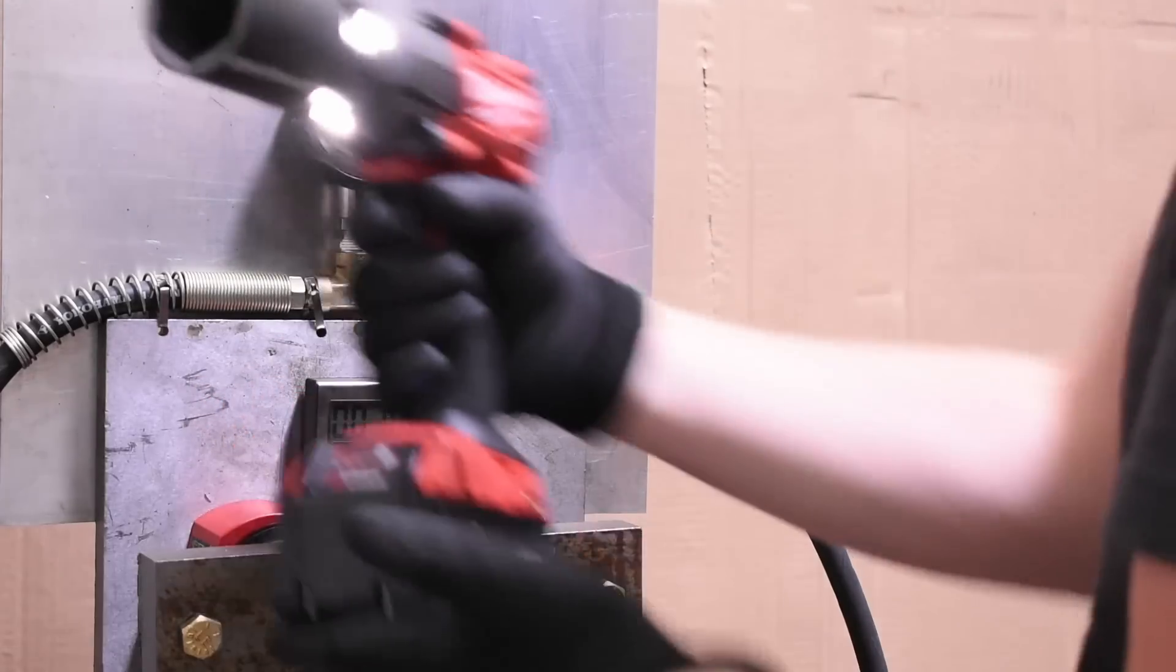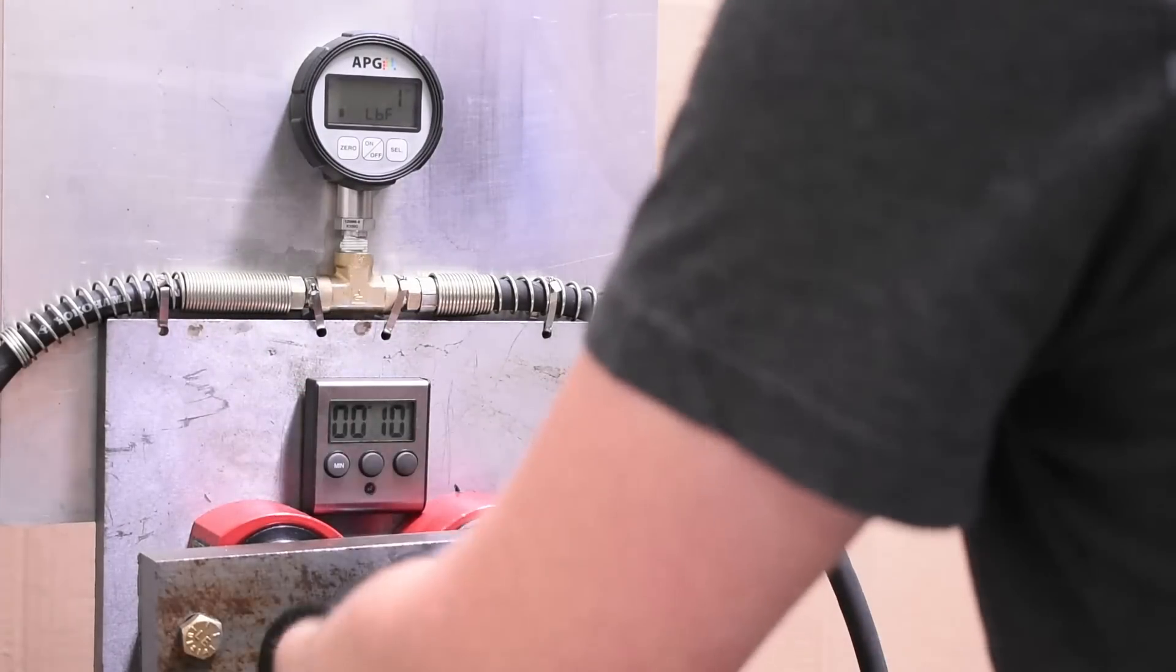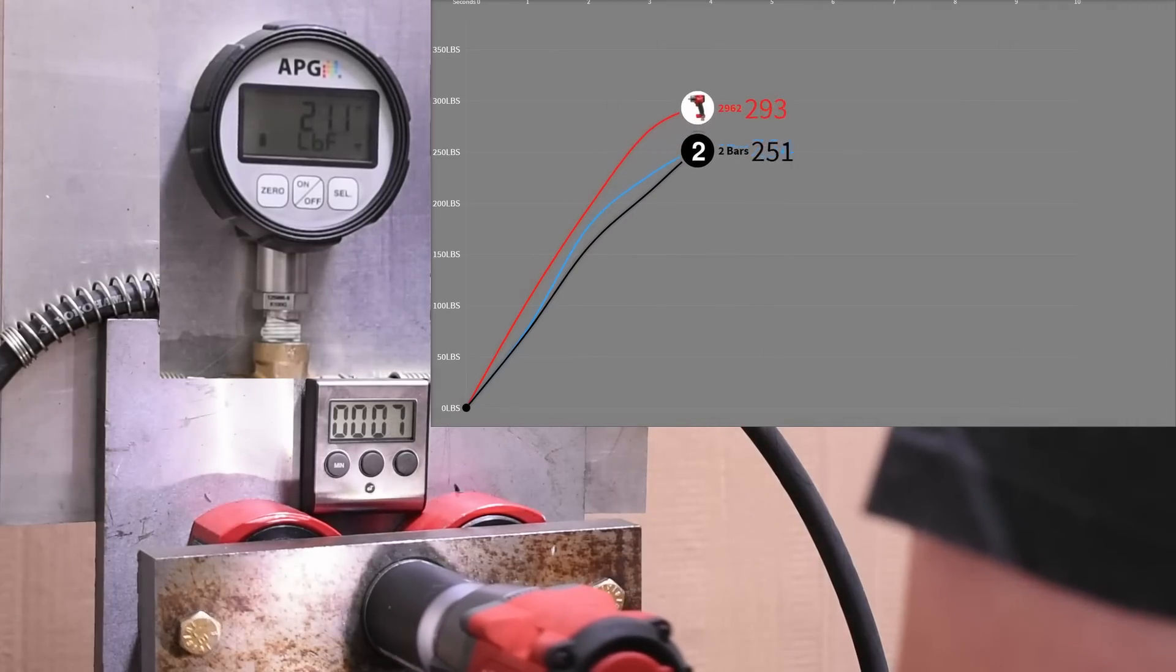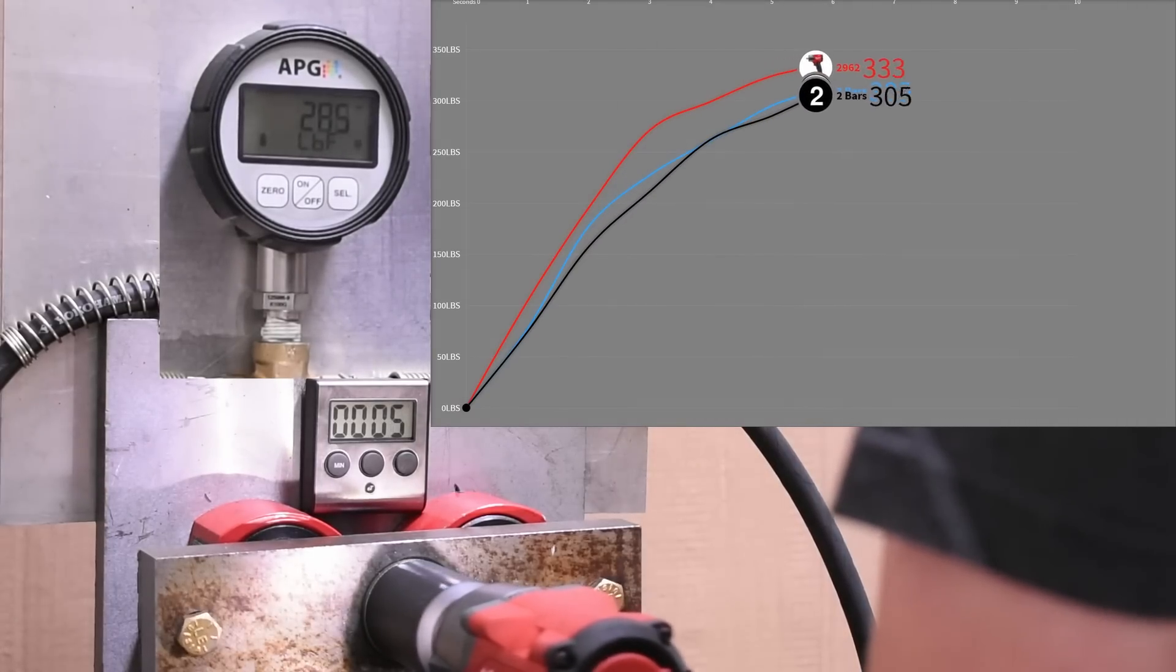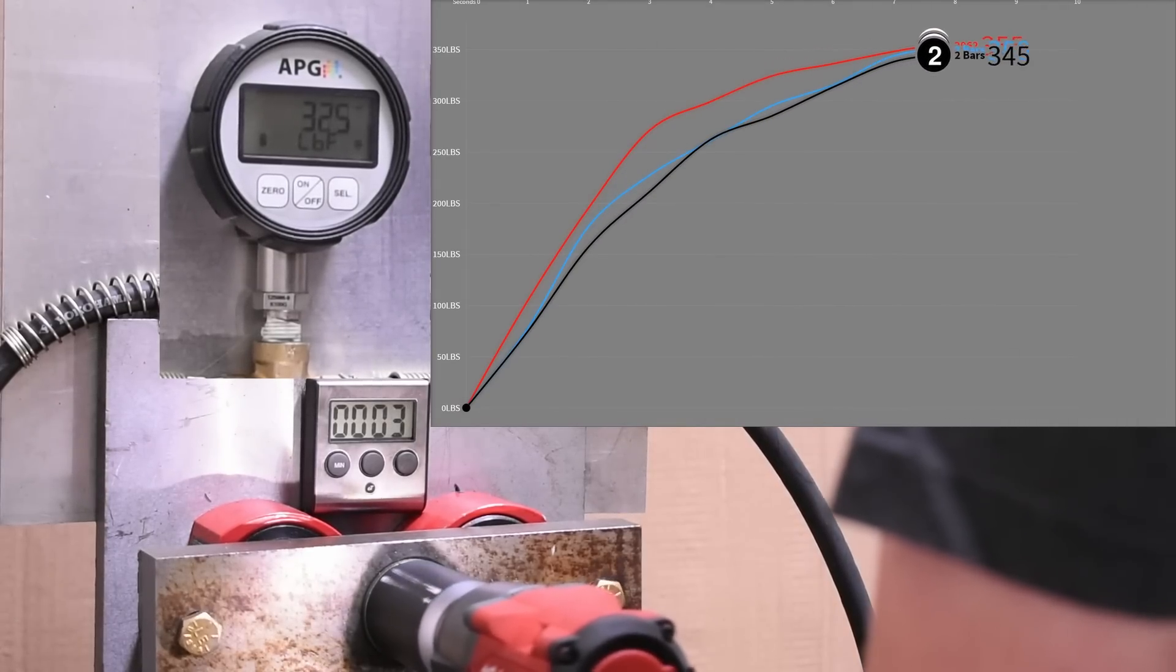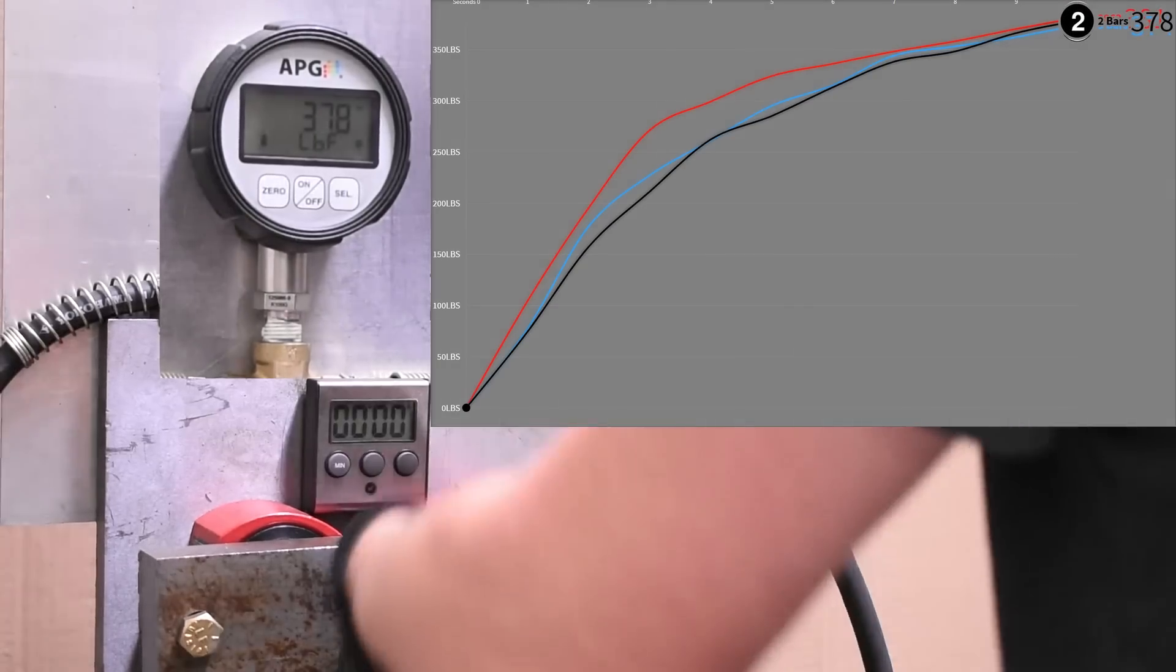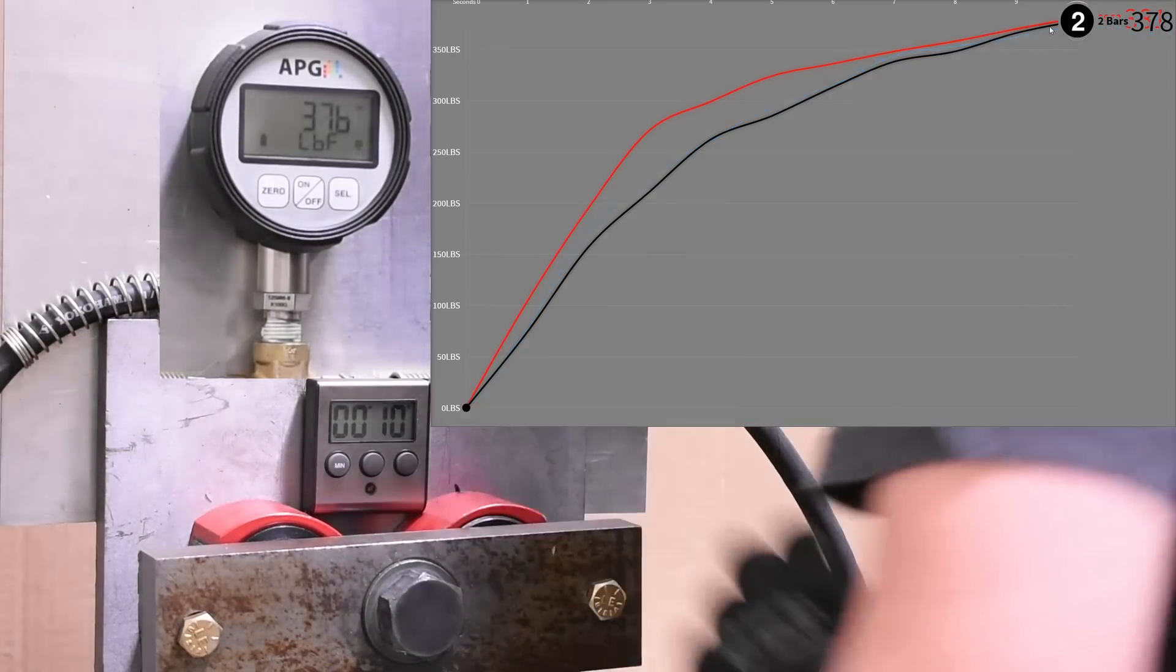Now here's a half charged M18 in black. 378 a couple points up like the Dewalt saw in its peak. Very little change along the curve but it is there.